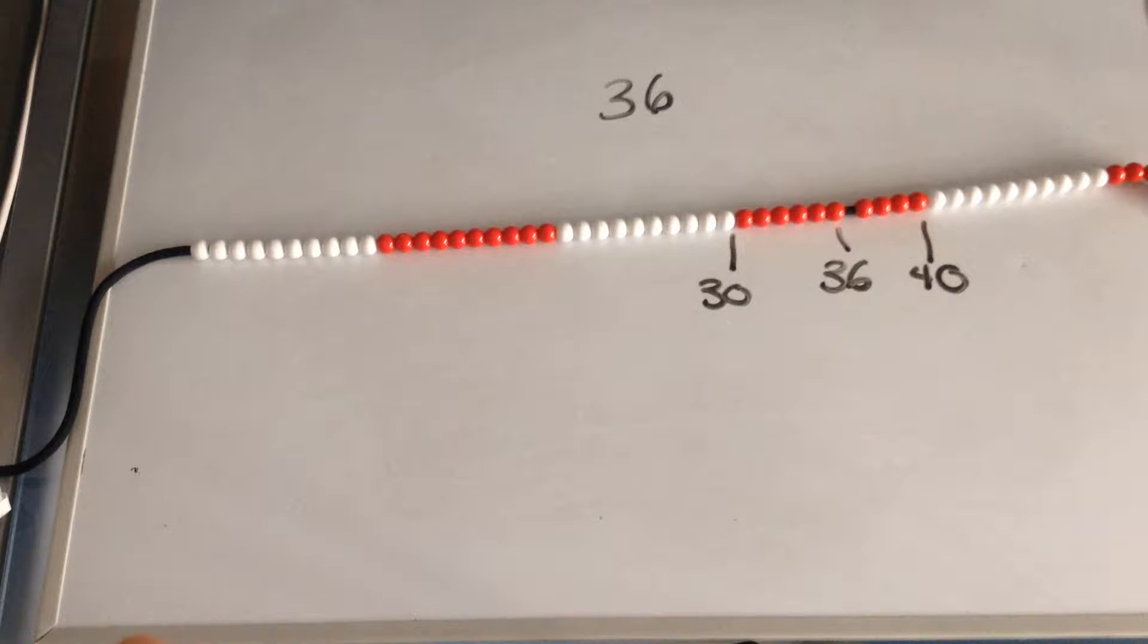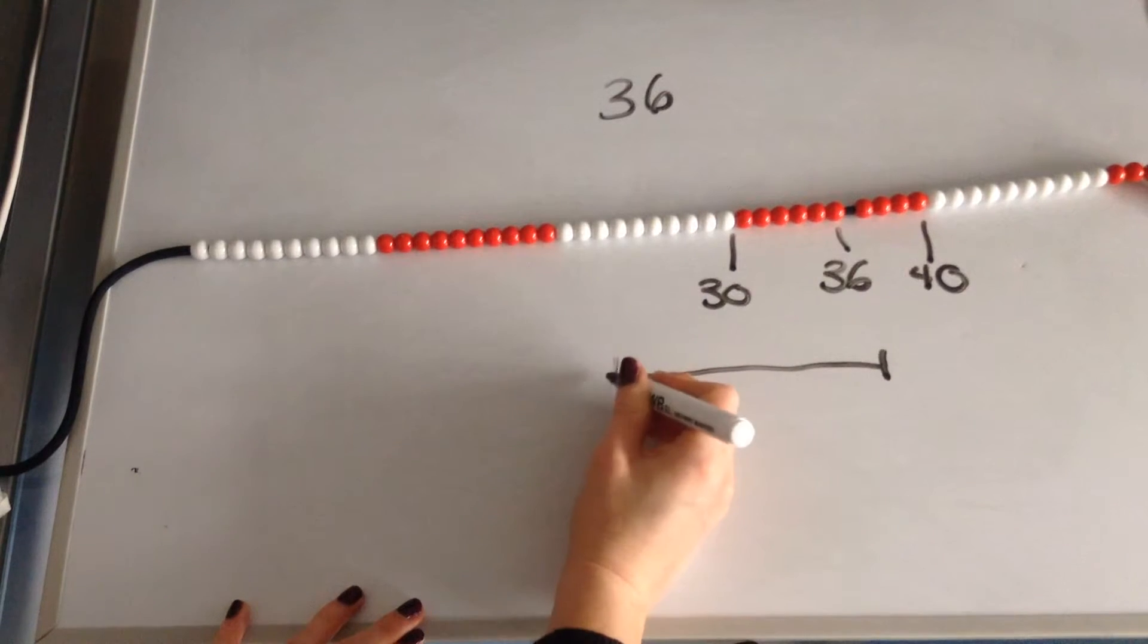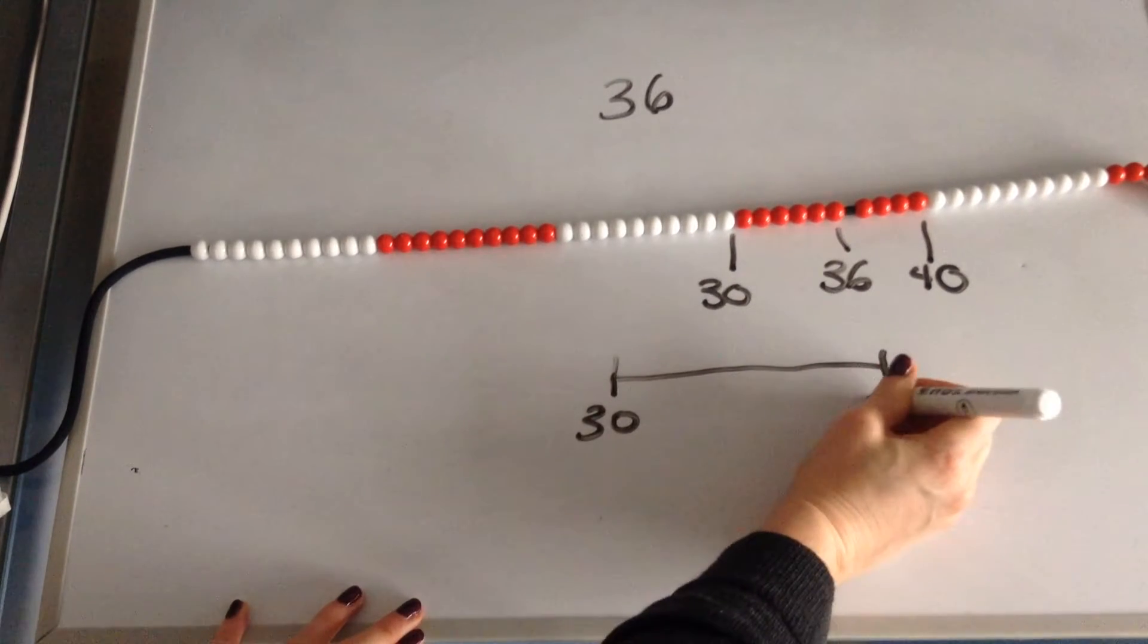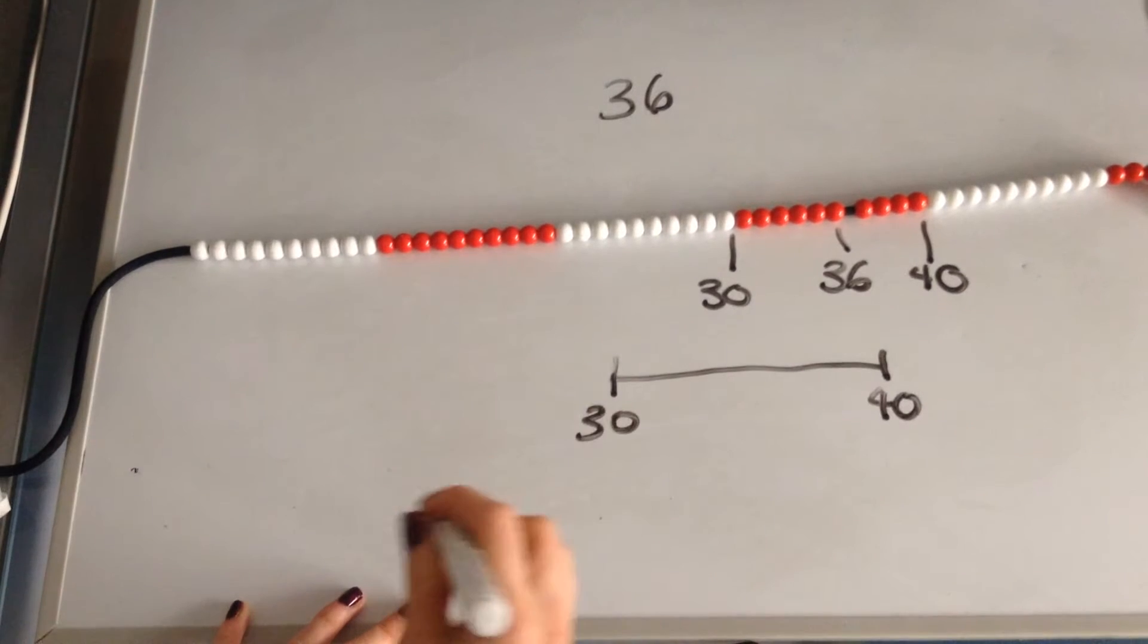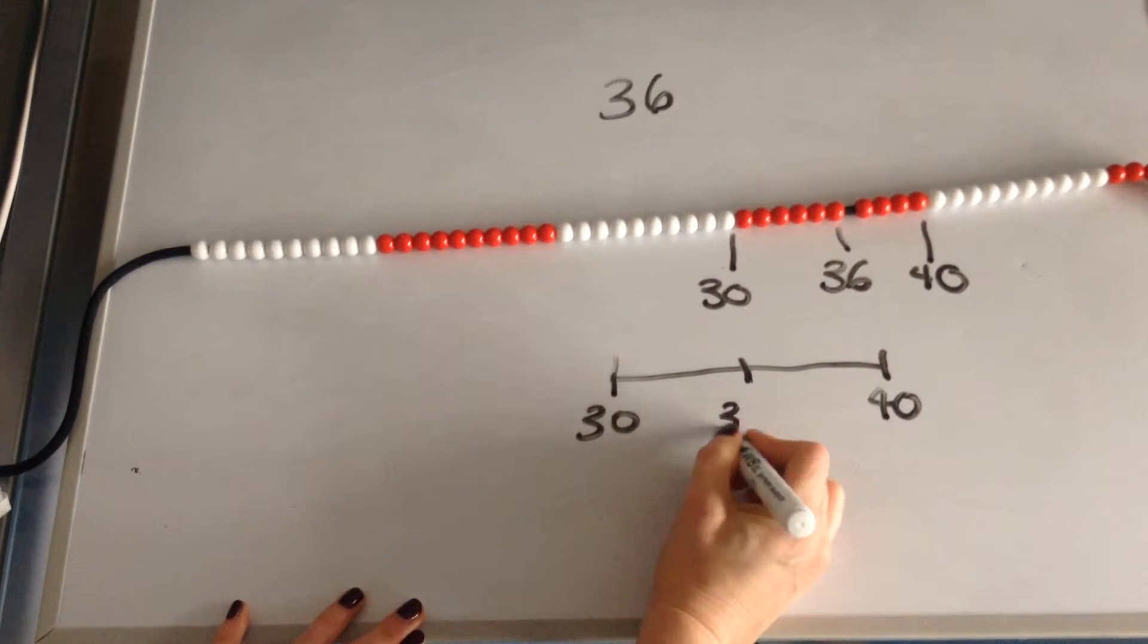I can show this on a number line. So I've got my 30 and my 40 are the two multiples of 10 that my number sits in between. And 35 is in the middle.